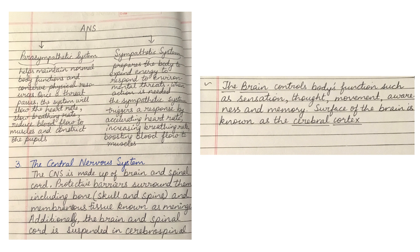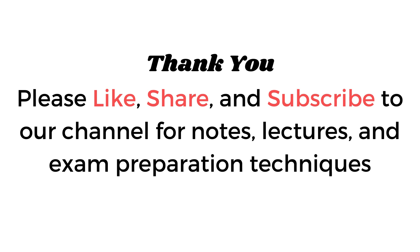The central nervous system is made up of the brain and spinal cord. Protective barriers surround them including bone — the skull and spine — and membranous tissue known as meninges. Additionally, the brain and spinal cord are suspended in cerebrospinal fluid. The brain controls body functions such as sensation, thought, movement, awareness, and memory. The surface of the brain is known as the cerebral cortex. In the next video, Part B, we will discuss in detail the functions of the brain and the rest of the chapter.